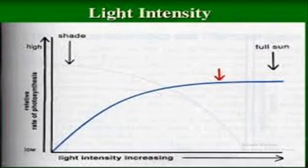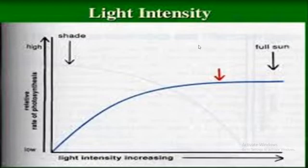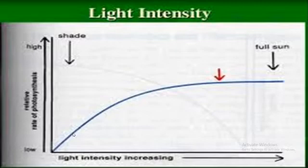If there is no excitation of electrons from photosystem 1 and 2, there is no production of ATP and NADPH. If there is low light intensity, there is a lower number of electrons which are excited from photosystem 2 and 1. If there is a lower number of electrons excited from photosystem 1 and 2, there is less production of ATP and NADPH.